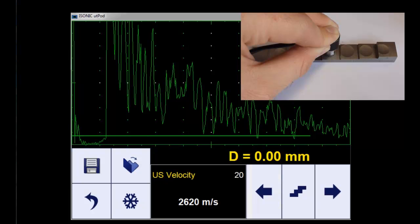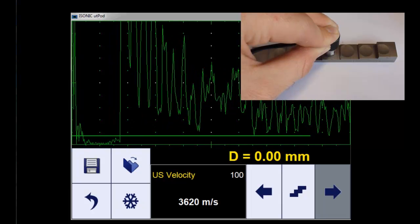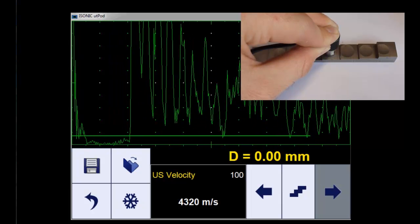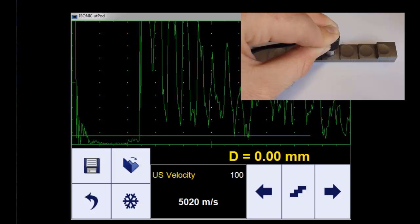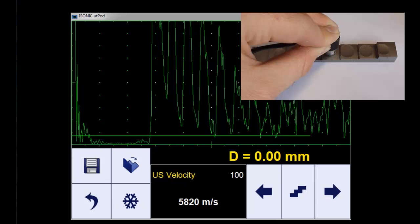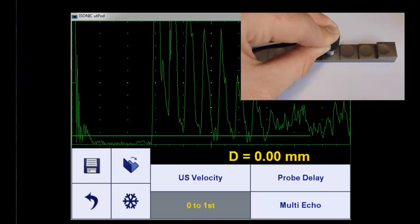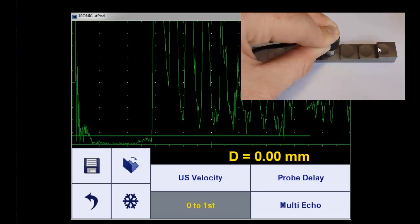We calibrate first for the sound velocity. The material we are working on has a certain sound velocity that has to be checked first and set. The instrument has to be set to that value. Let's say it's 5920 in this case, as we are using the step block for calibration.